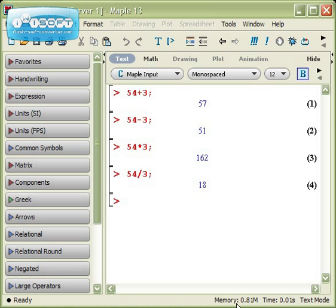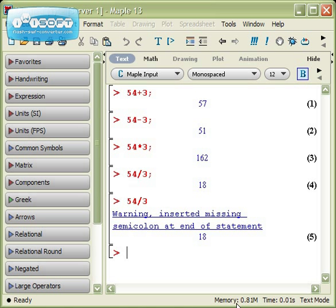Now what happens if you ever forget one of these things? Suppose you were to type in 54 divided by 3 and forget the semicolon. Don't worry, you'll get an error message. Maple says that it's inserted a missing semicolon at the end of the statement and it runs it for you.